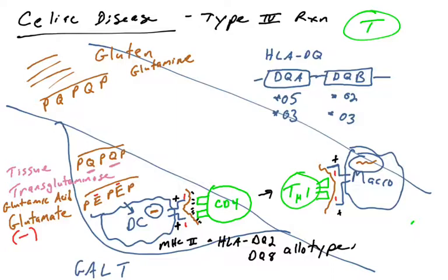And the HLA-DQ2 or DQ8 or another allotype that has the ability to hold a negatively charged peptide, holds it in there nicely, presents it to T cells, and the T cell says, yep, that I recognize, let's launch an attack.